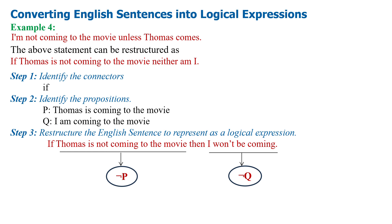These two propositional variables can be combined by using the conditional logical operator: if negation P then negation Q, which can be written as negation P implies negation Q. Here, implies represents the conditional logical operator.